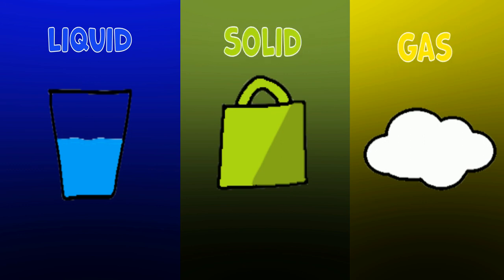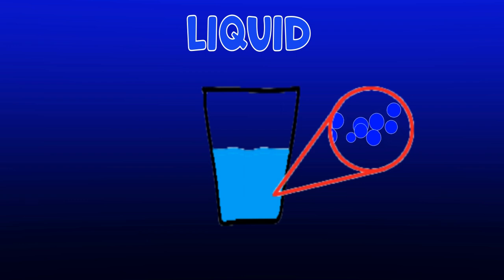solid, and gas. Now you will learn all three of them today. So let's get started. Liquid takes on the shape of the container. The particles just move freely around. They're not spaced apart.